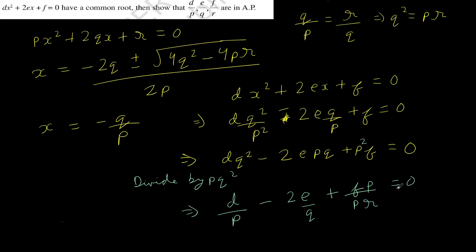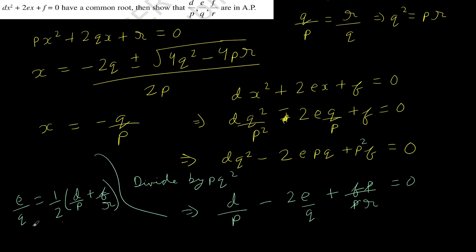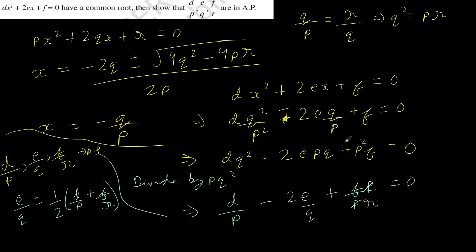This gives us E by Q equals one half times (D by P plus F by R), meaning E by Q is the arithmetic mean of D by P and F by R. Therefore D by P, E by Q, and F by R are in an arithmetic progression, which is what we needed to prove.